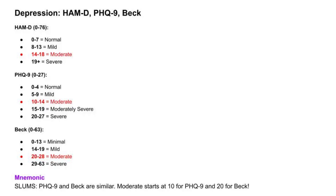Remember: PHQ-9 and Beck are similar — moderate starts at 10 for PHQ-9 and at 20 for Beck. HAMD, on the other hand, is slightly different. Just remember: mild ends at 13, moderate starts at 14.